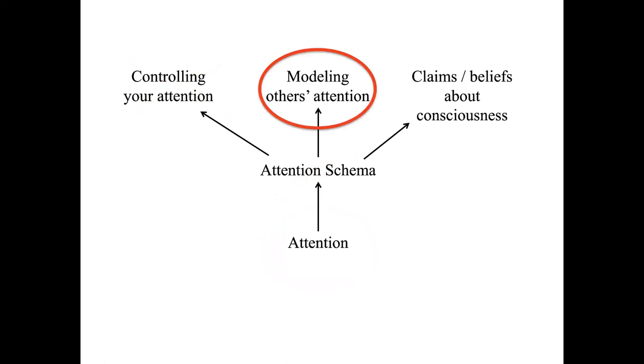Now let's talk about social cognition. What is the evidence for this branch of the theory? We've talked about the other two branches. It's well established that people reconstruct the attention of others. And in that sense, we already know this part of the theory is correct. People build models of other people's attention.